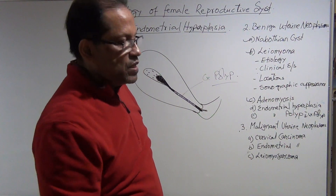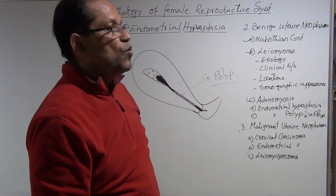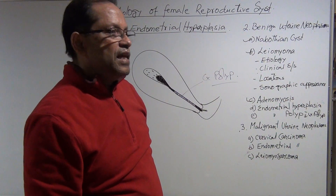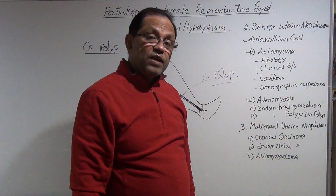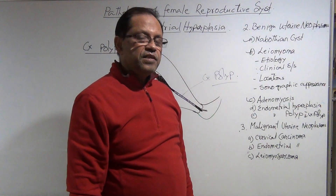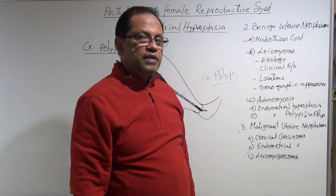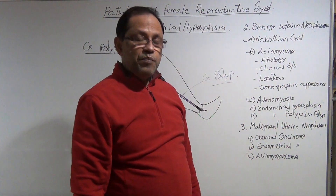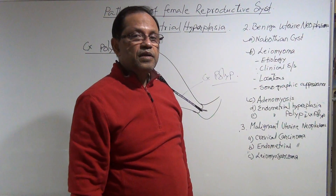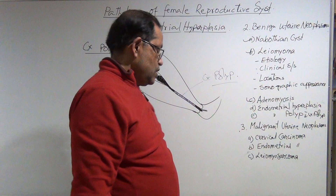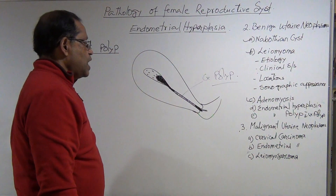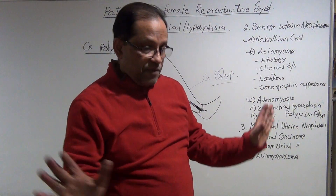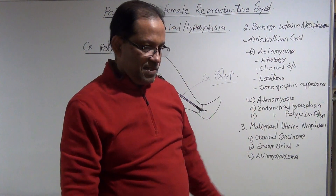Check whether the cervical polyp is hypervascular, normally vascular, or avascular using color Doppler. A cervical polyp can cause infertility, pain, and pressure. We need to rule out that this is a cervical polyp and not something else.